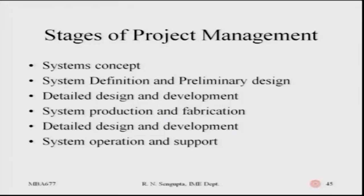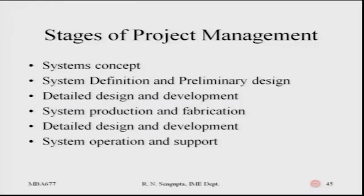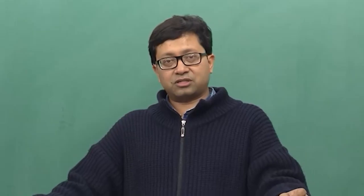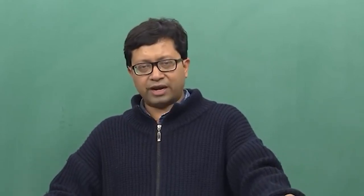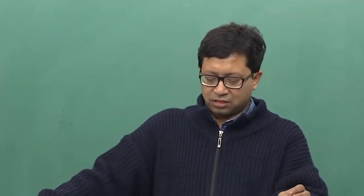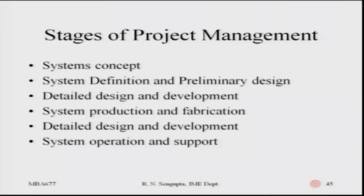The stages of project development: the systems concept should be considered, the system definition and preliminary design done, and the detailed design and development analyzed to make sense with respect to the project objective. System production and fabrication should be done such that all inputs and processes are in line to meet the overall output and objective. The detailed design and development of each nitty-gritty of the processes should be analyzed once the overall macro idea is fixed, and the system operations and support system should meet the overall guidelines of the project.